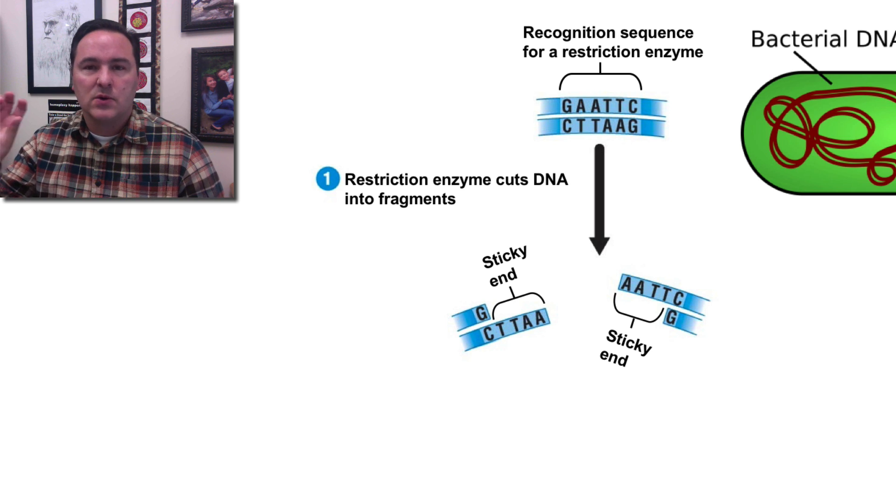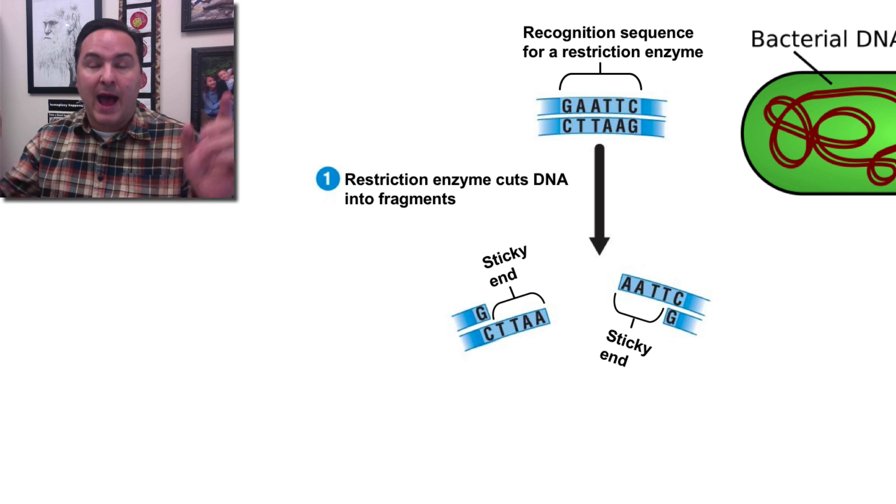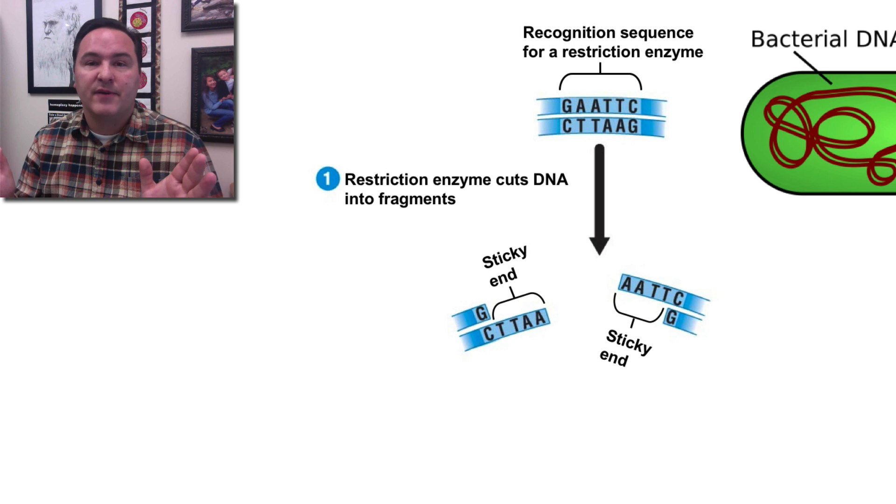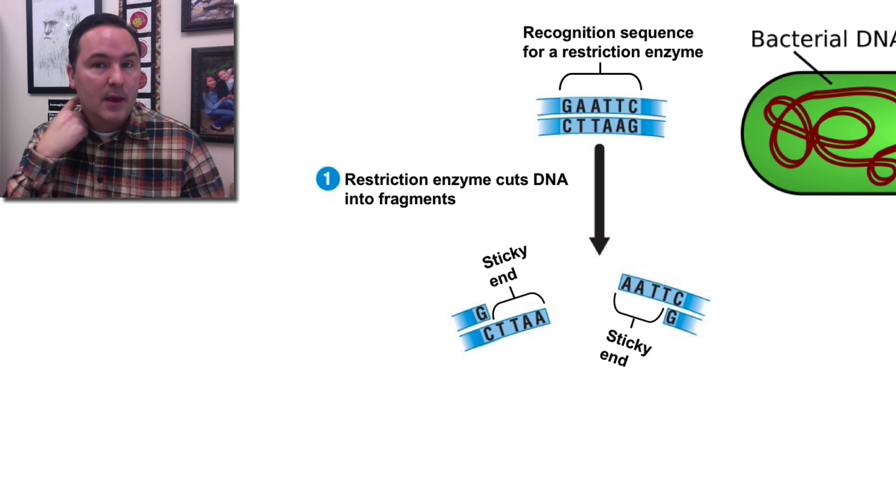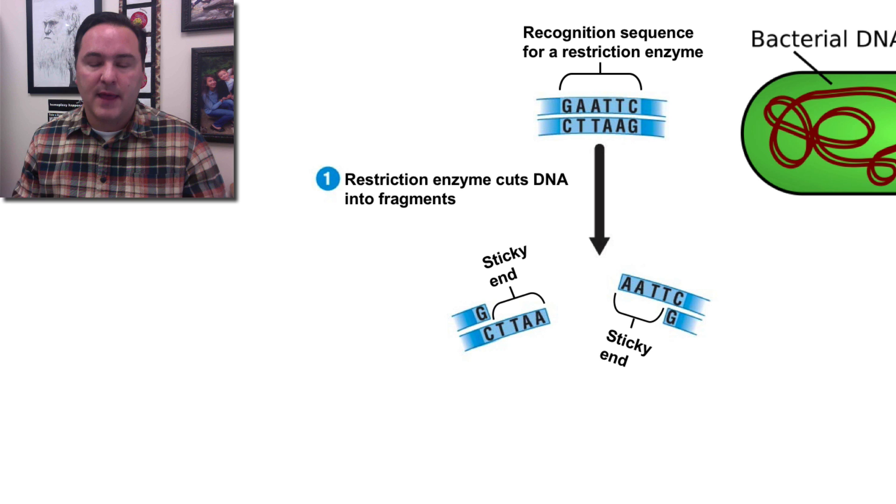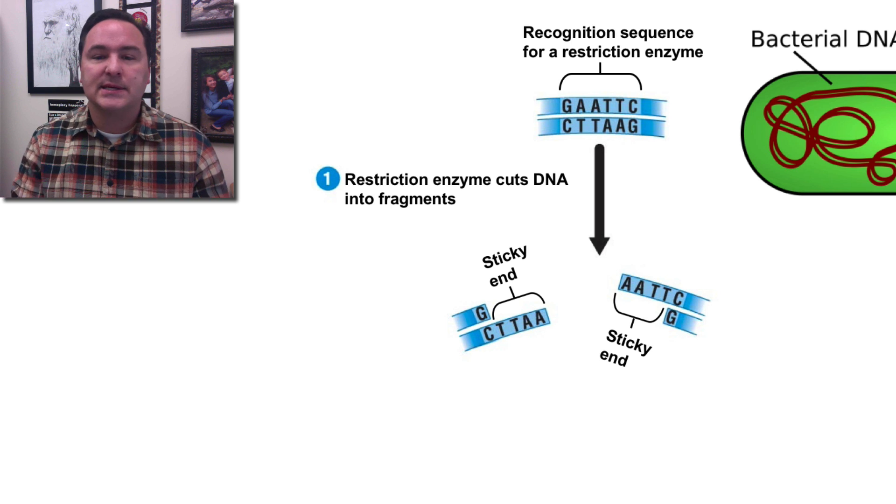And so, what we can do is we can also cut out a gene from an organism of interest. For example, if we wanted to cut out the gene that makes insulin from humans,